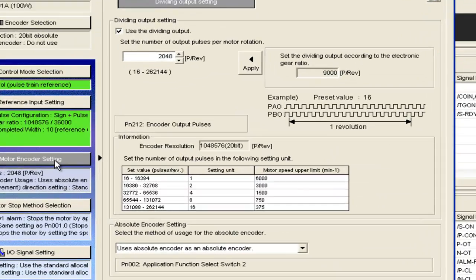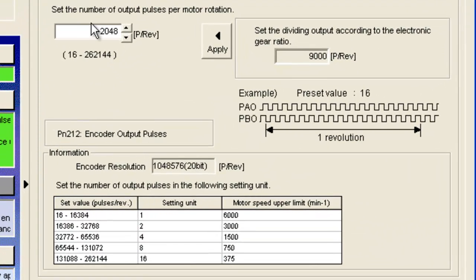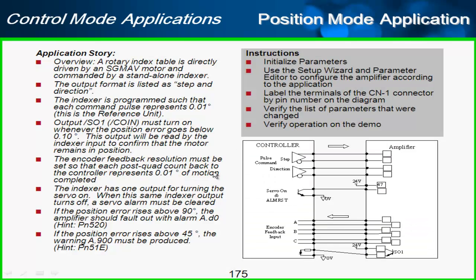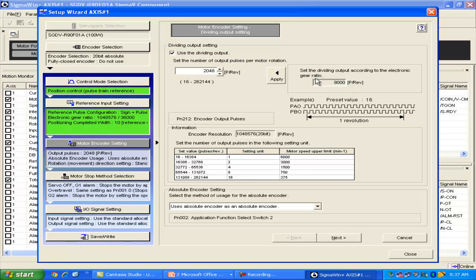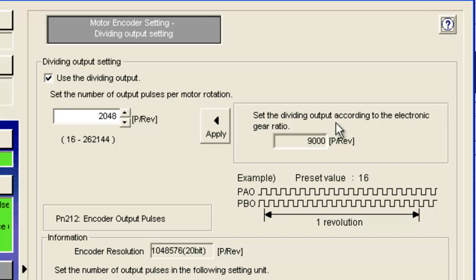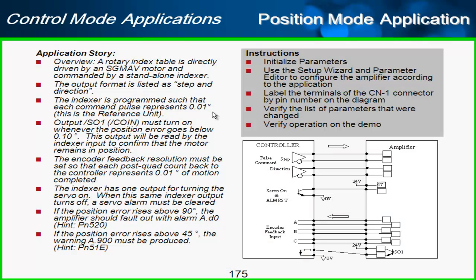Moving on to the motor encoder setting. We are able to set the number of pulses per motor rotation. And here I've said that the encoder feedback resolution must be set so that each post-quad count back to the controller represents 0.01 degree of motion completed. This is actually what's happening here, where it says set the dividing output according to electronic gear ratio. Why 9,000? Well, 9,000 is pre-quad pulses. So after quad, that would be 36,000. Basically, you can see that if the reference unit is 0.01 degrees, then 360 degrees equals 36,000 reference units.